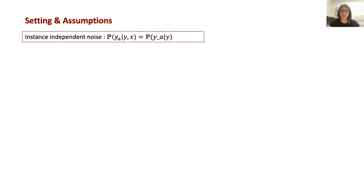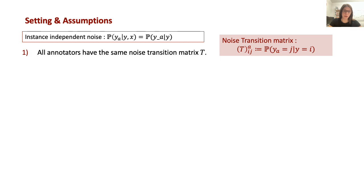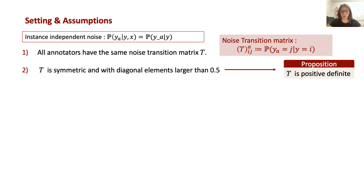In this work, we analyze the case of instance-independent noise, meaning that the probability of an annotator mislabeling a sample depends only on the class of that particular sample. In this setting, for each annotator, we can describe the noise distribution through a noise-transition matrix. The element ij of this matrix represents the probability of that annotator mislabeling by assigning class j to a sample that actually belongs to class i. We assume that all annotators have the same noise-transition matrix, which is symmetric and diagonally dominant. This implies that the matrix is also positive definite.